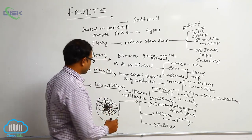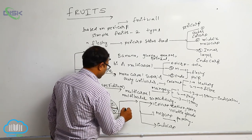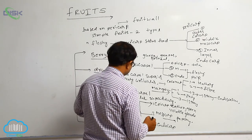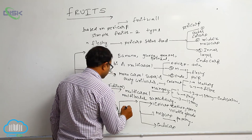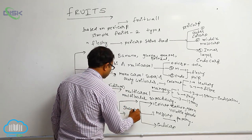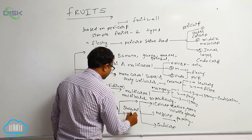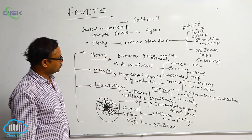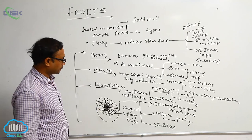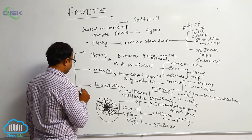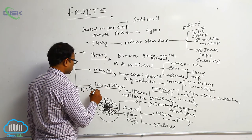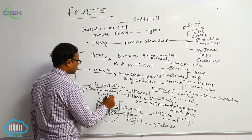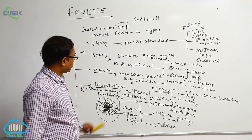Inside the endocarp there are succulent juicy hairs — that is an important objective point. The endocarp is succulent, and these succulent juicy hairs are the edible part. That is known as hesperidium. Examples of hesperidium are citrus species — lemon and sweet orange.